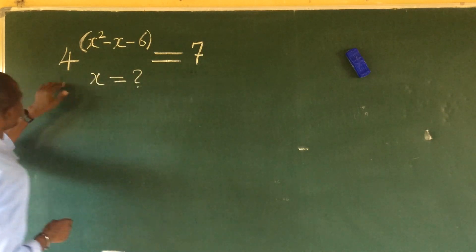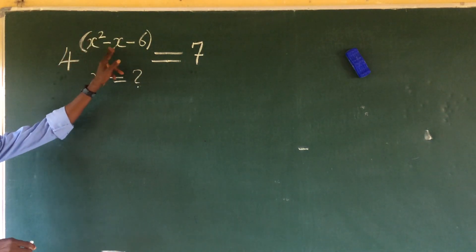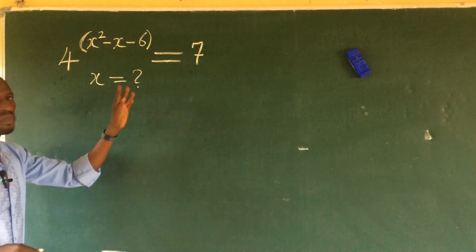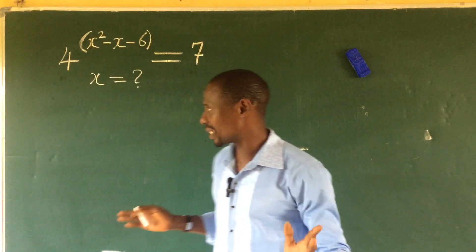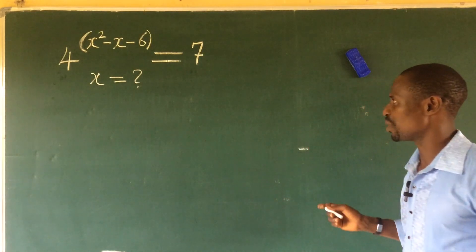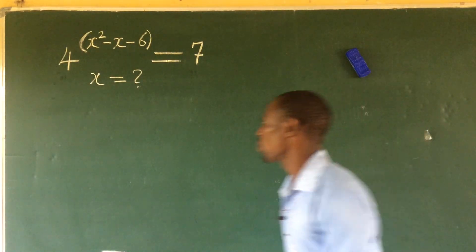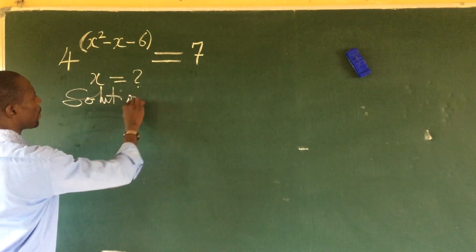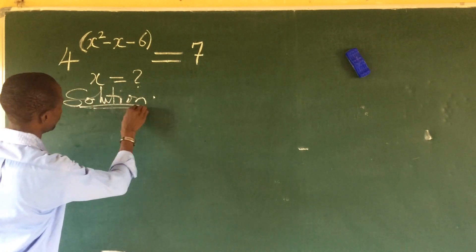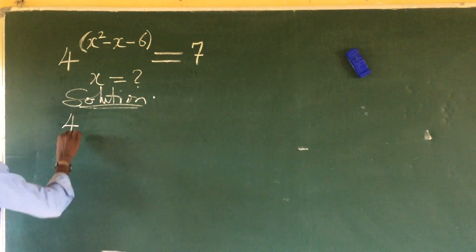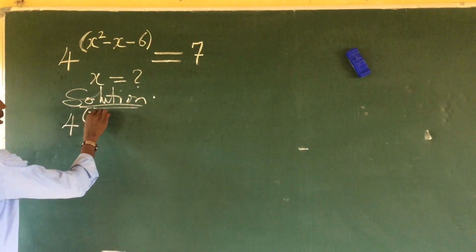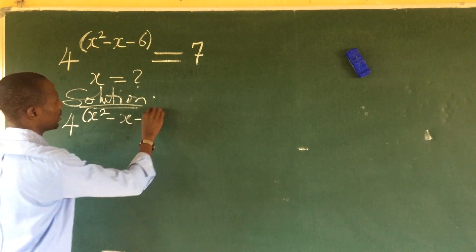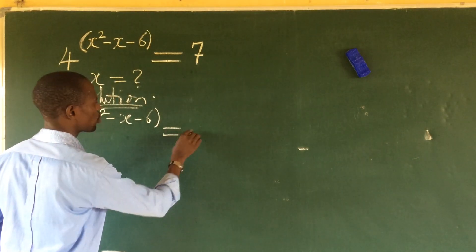The question reads: 4 to the power of (x² − x − 6) equals 7. What will be the possible values of x that satisfy this exponential equation? Let's put down the question: 4^(x² − x − 6) = 7.